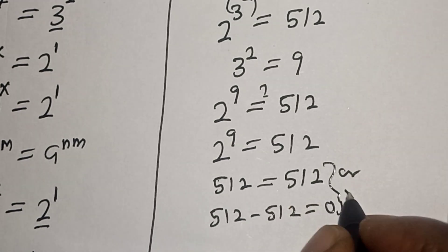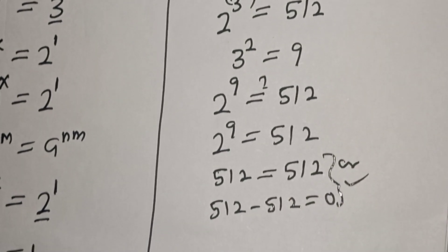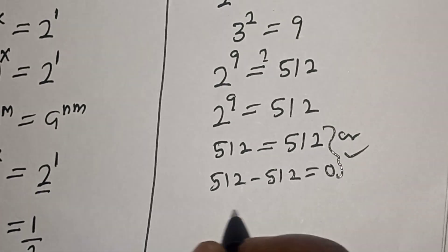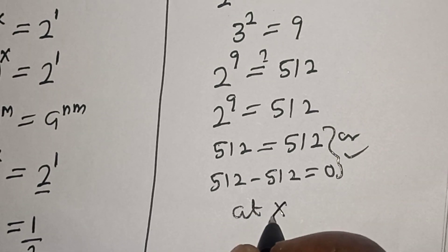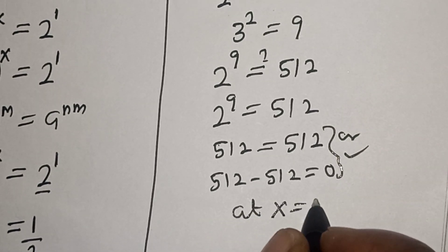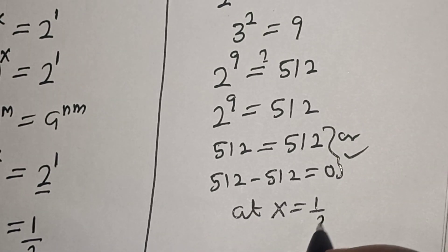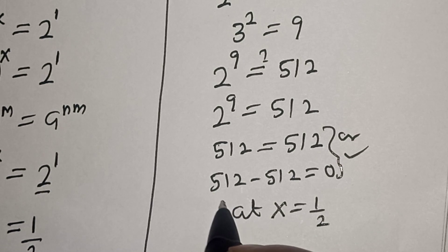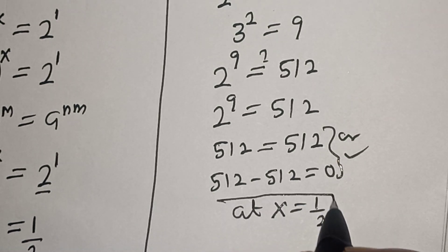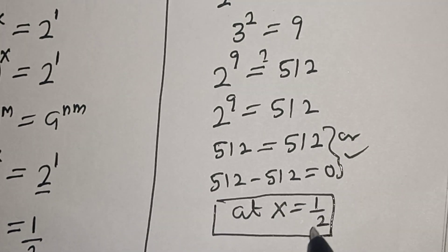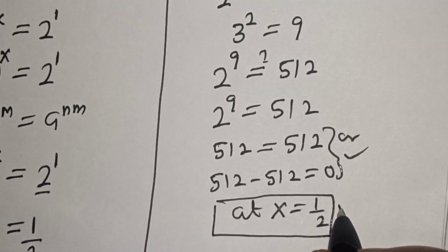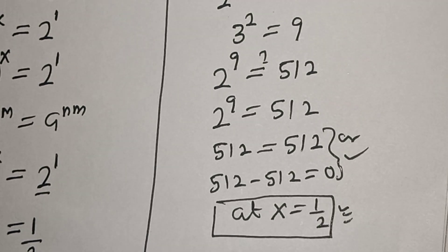512 minus 512 equals 0, so we satisfy the given equation at x equals 1 over 2. Before you leave, please like, share, comment, and subscribe. Thank you, bye bye.